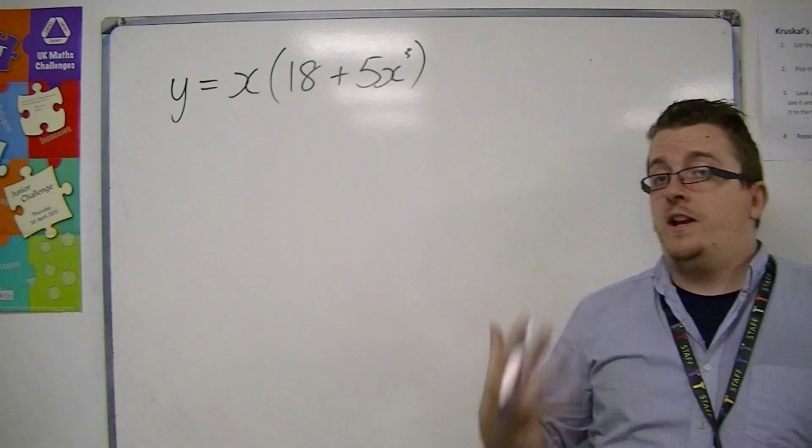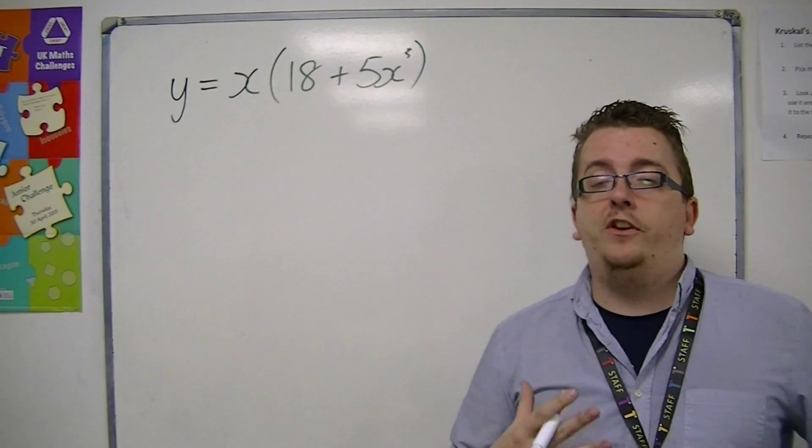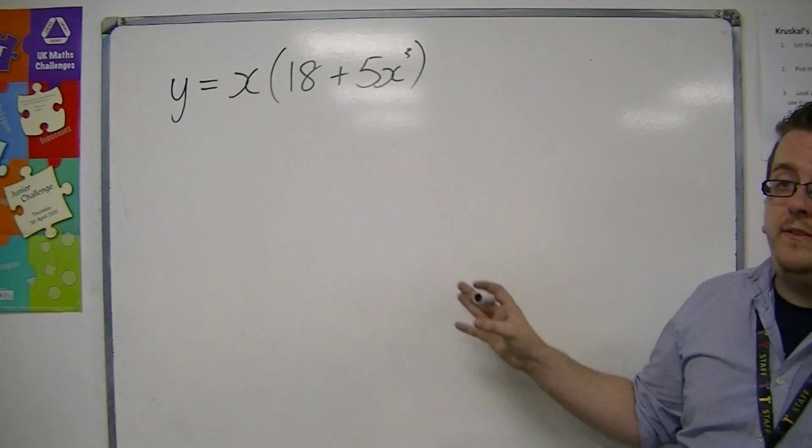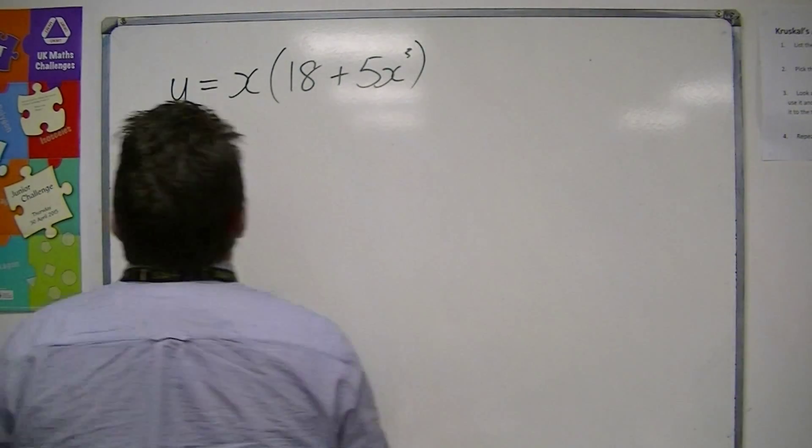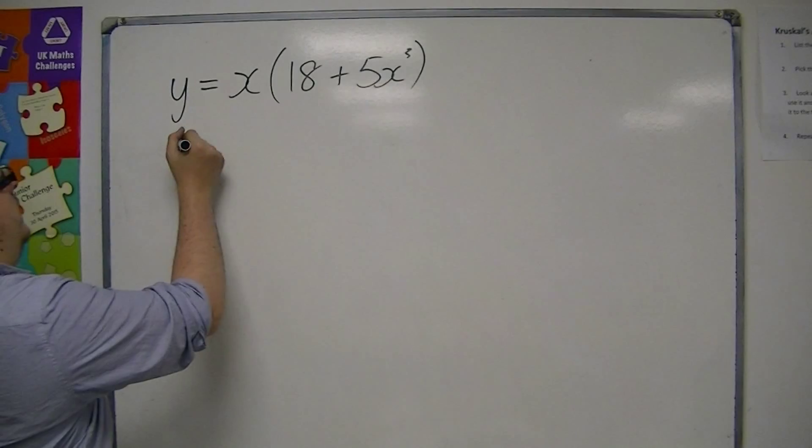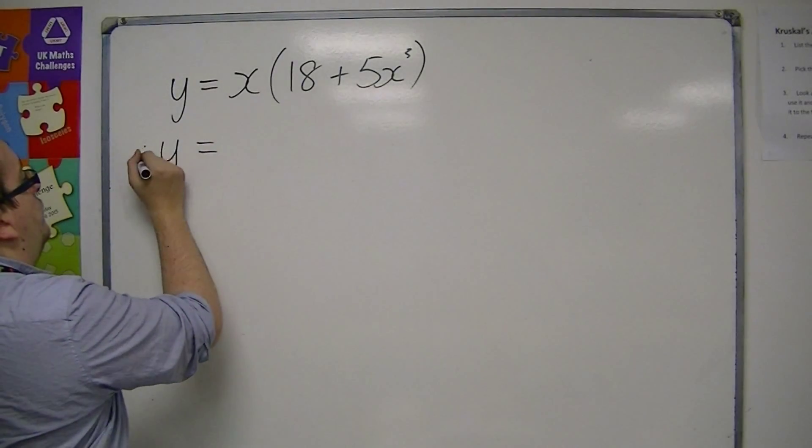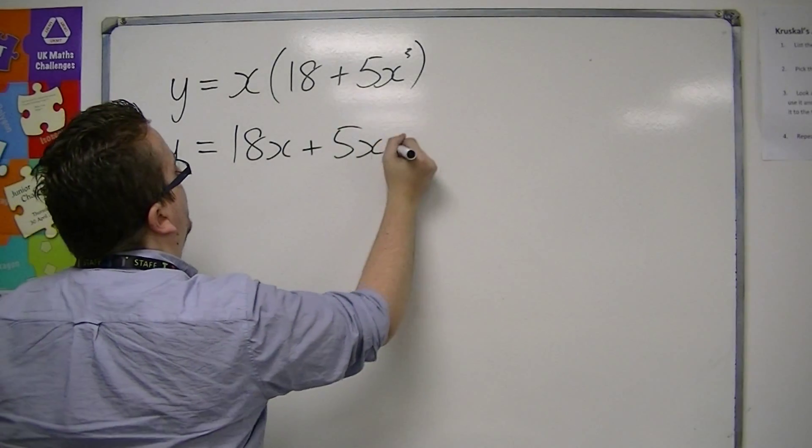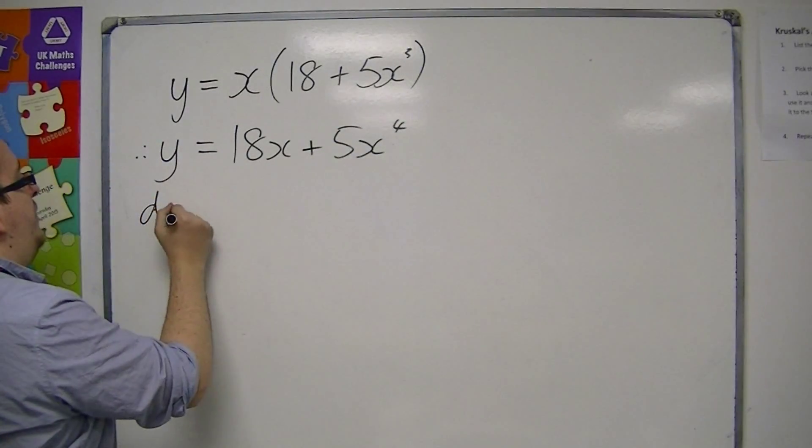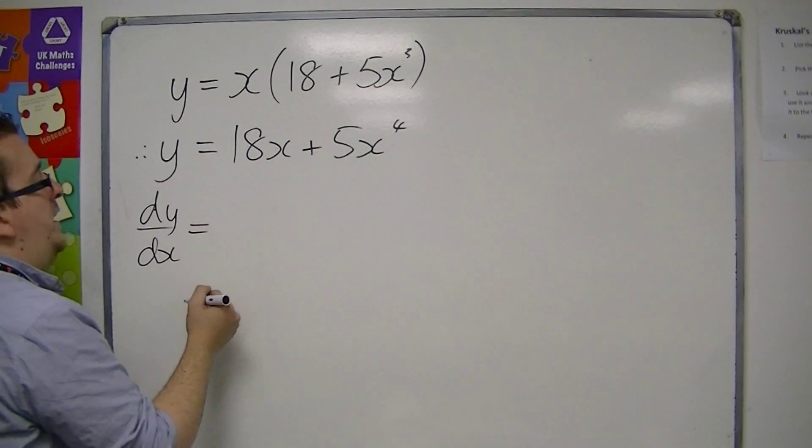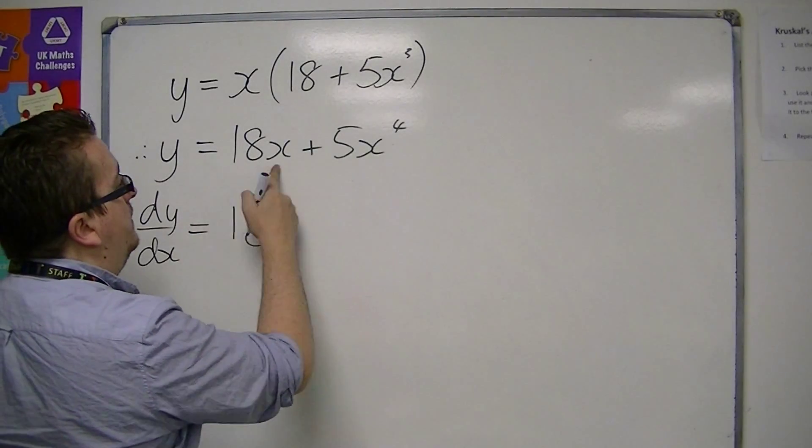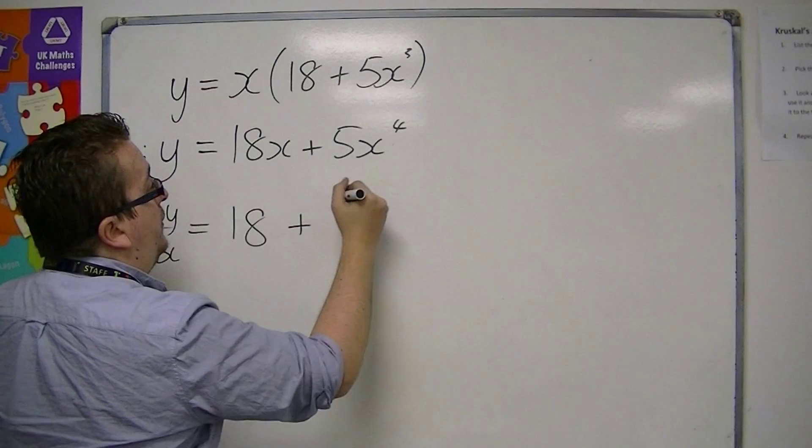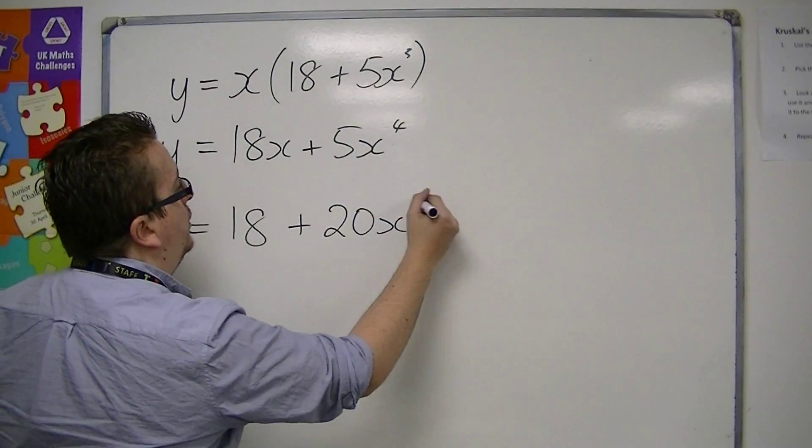We do not currently have the techniques that are required in order to differentiate it as is. So multiply out the brackets, it's very important. So, first of all, y is equal to 18x plus 5x to the 4, and then just differentiate it as normal. So dy by dx would be 18 plus 20x cubed.